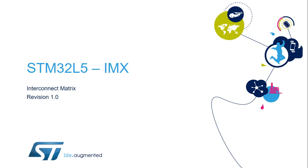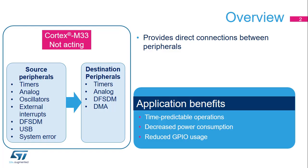Hello and welcome to this presentation of the STM32 interconnect matrix. It covers the main features of this matrix, which is widely used to connect various internal peripherals to each other. The interconnect matrix integrated inside STM32 products provides direct connections between peripherals. Applications benefit from these interconnections to ensure time-predictable operations.